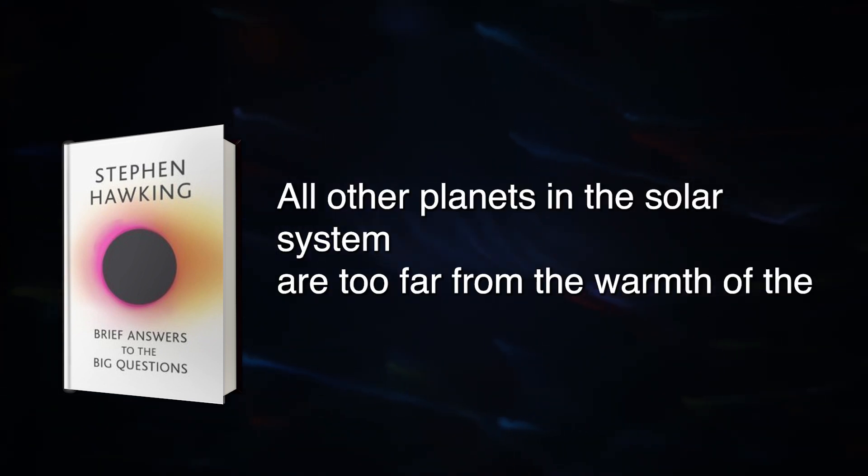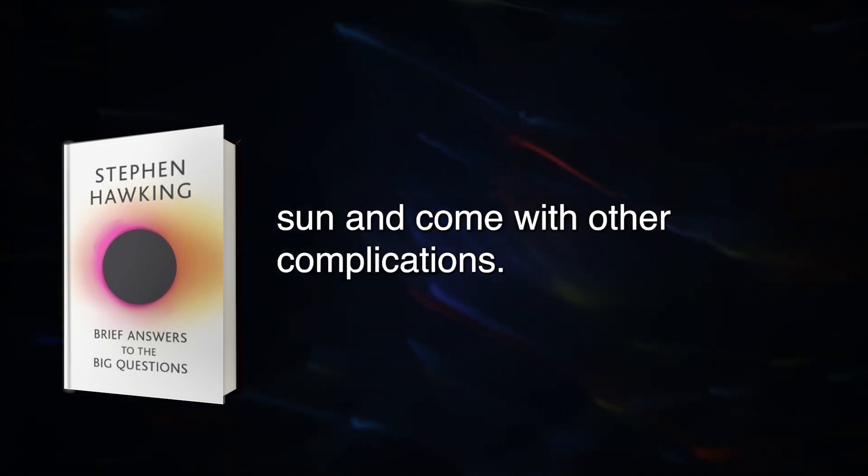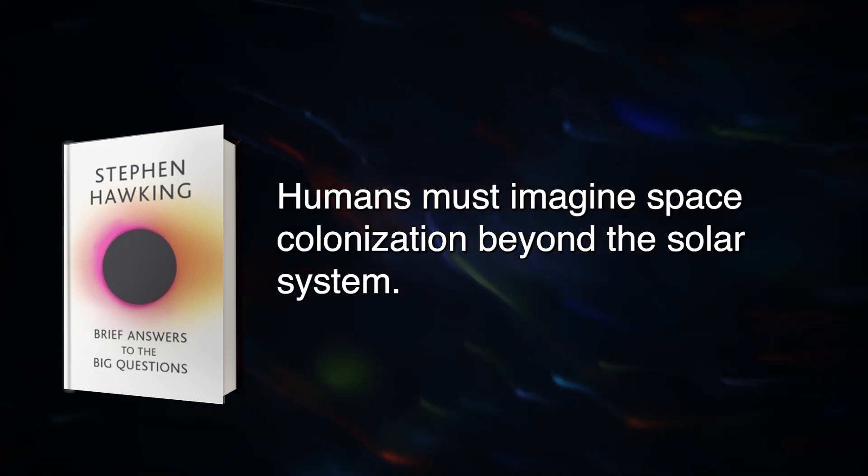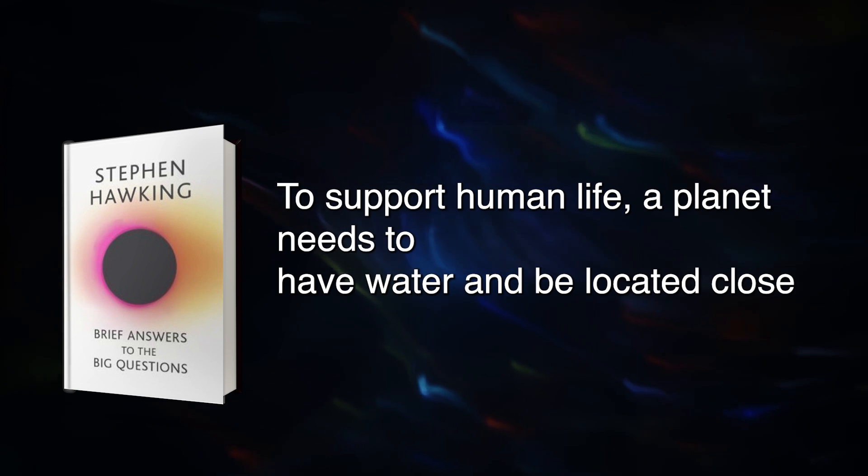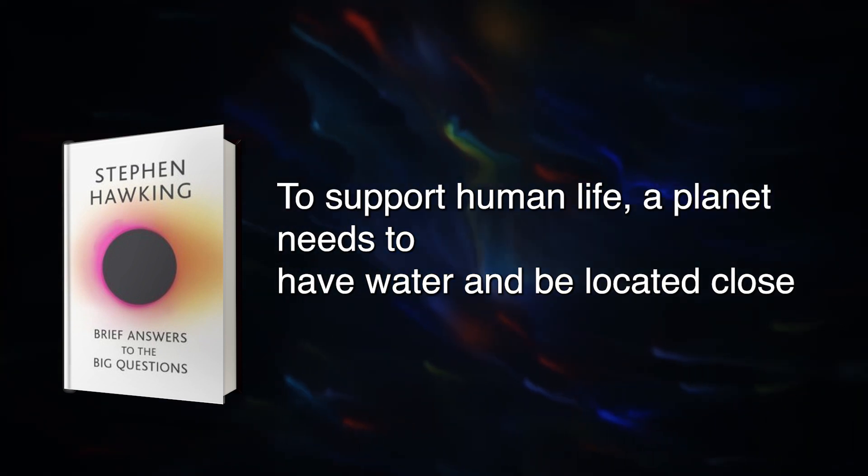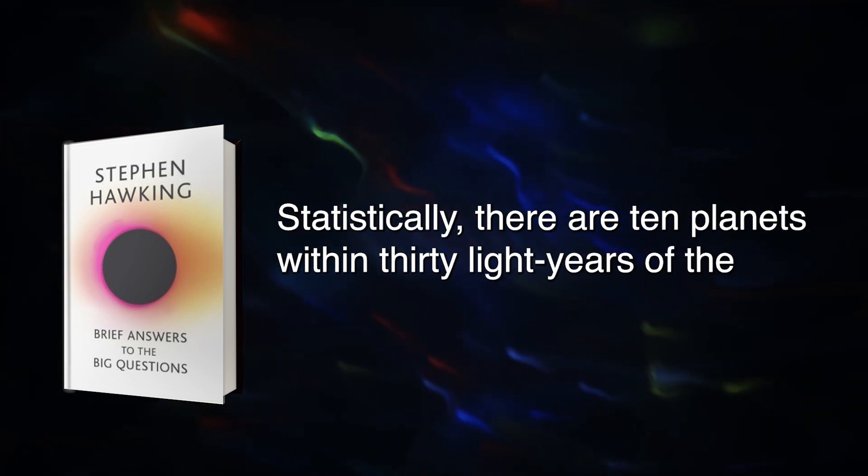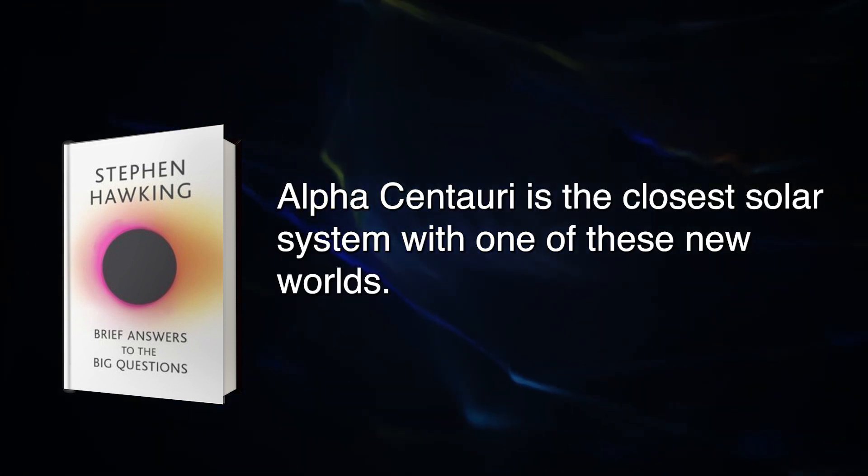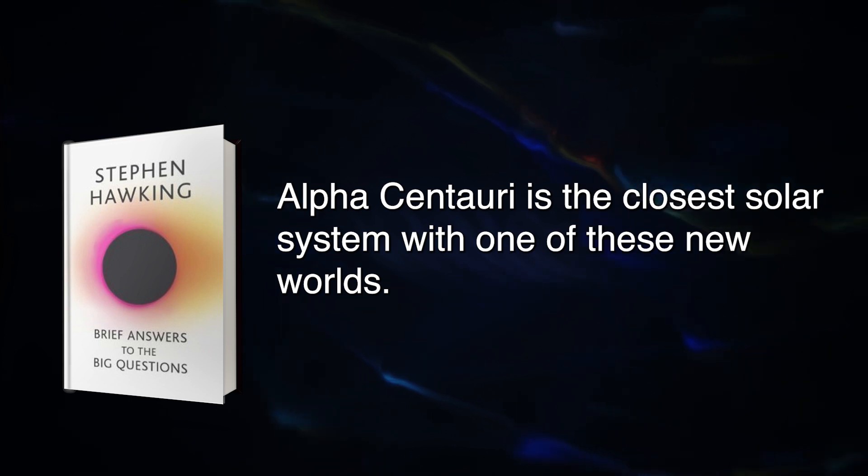All other planets in the solar system are too far from the warmth of the Sun and come with other complications. Humans must imagine space colonization beyond the solar system. To support human life, a planet needs to have water and be located close to a star. Statistically, there are 10 planets within 30 light years of the Earth that fit these requirements. Alpha Centauri is the closest solar system with one of these new worlds.